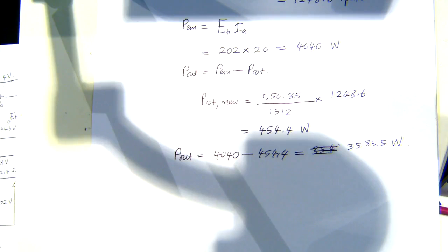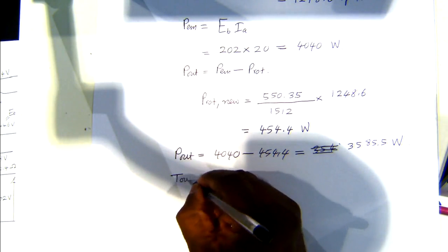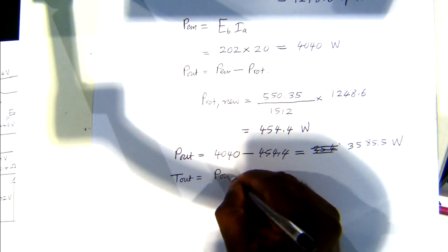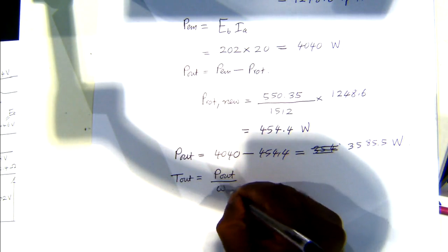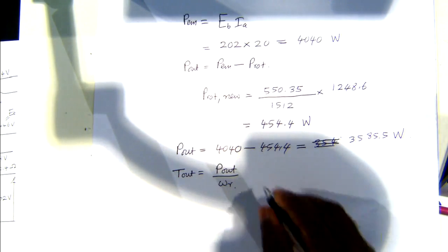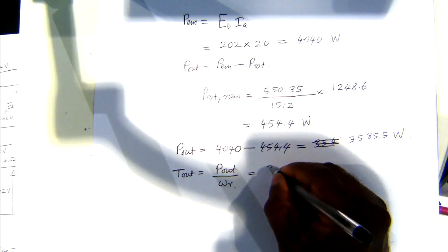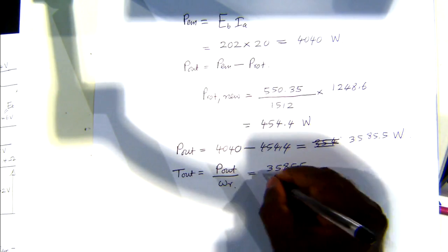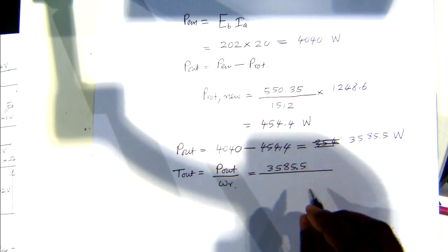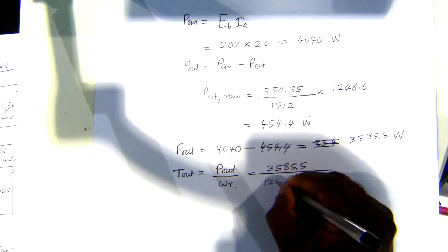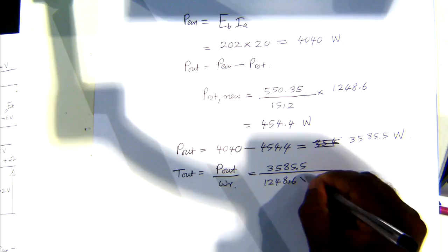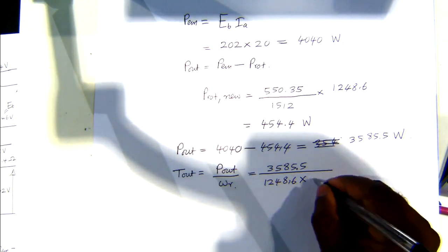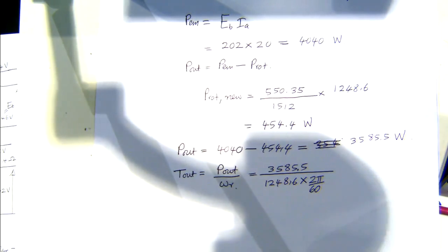The output mechanical torque equals output power divided by angular speed. That's 3585.5 W divided by (1248.6 RPM converted to radians per second by multiplying by 2 pi over 60).